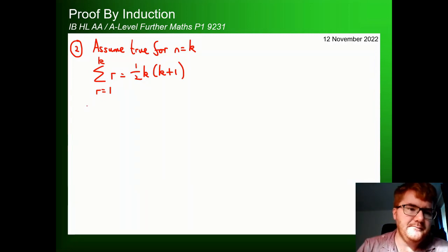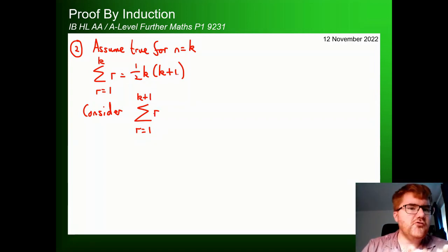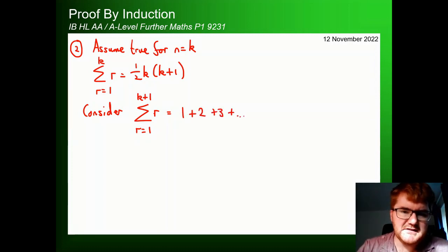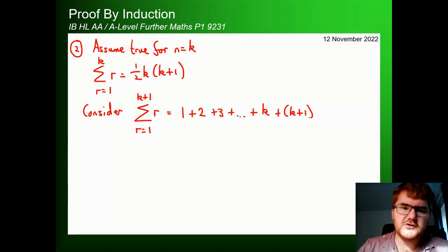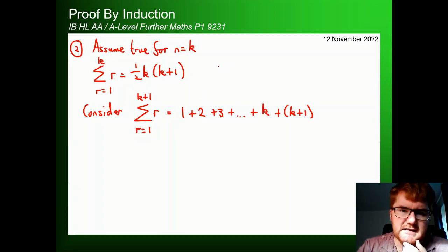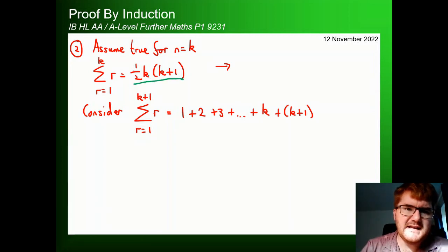Now we consider the sum from r=1 to k+1 of r. Writing out the sequence: 1 + 2 + 3 + … + k + (k+1). What we're aiming for is to make this look like the assumed formula but with k replaced by k+1. So the target expression — with k replaced by k+1 — is ½(k+1)(k+2).